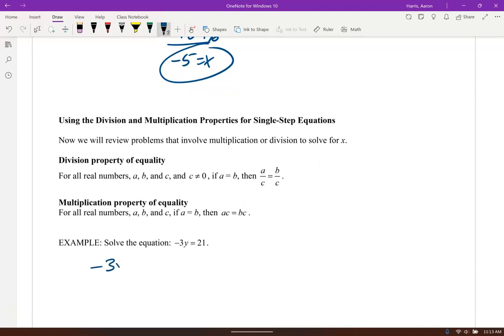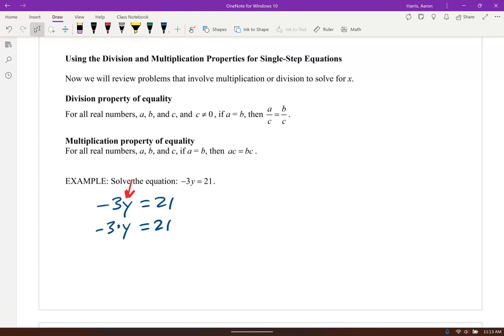Right here, we've got negative 3y equals 21. Again, we're trying to isolate the y, and right now the operation is multiplication. We're multiplying negative 3 and y, so we're going to do the opposite of multiplication. We're going to use division to get rid of that, because we know negative 3 over negative 3 is 1y. 21 over negative 3 is negative 7, so y is negative 7.